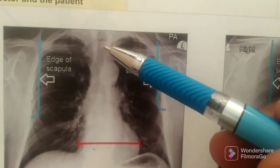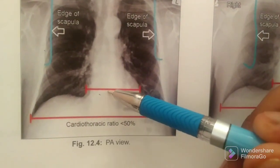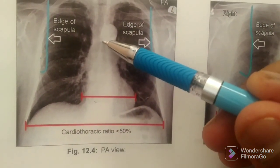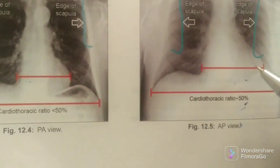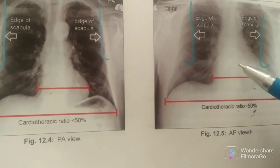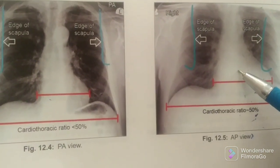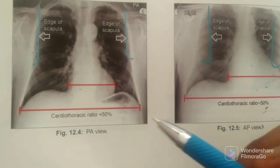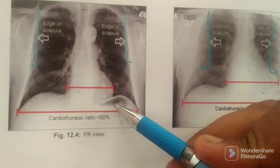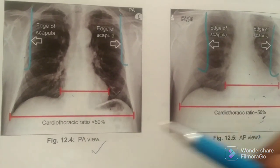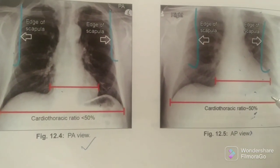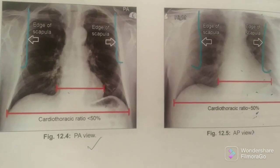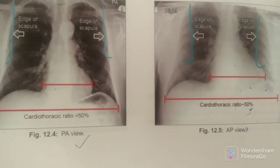Spines are sometimes visible in PA view up to some thoracic vertebrae, whereas in AP view no spines will be seen. Also, the fundic gas bubble is more visible in PA view and is not visible in the case of AP view. So these were some major differences seen between PA and AP chest X-ray views.